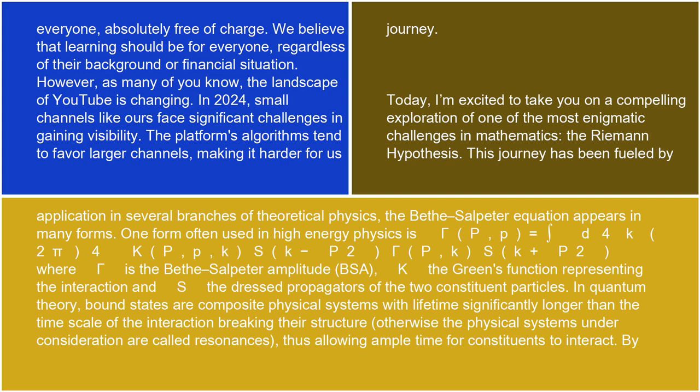One form often used in high-energy physics is: γ(P, P) equals integral d⁴k / (2π)⁴ · K(P, p, k, s, k−p/2) · γ(p, k, s, k+p/2), where γ is the Bethe-Salpeter Amplitude, BSA; K the Green's function representing the interaction; and S the dressed propagators of the two constituent particles.